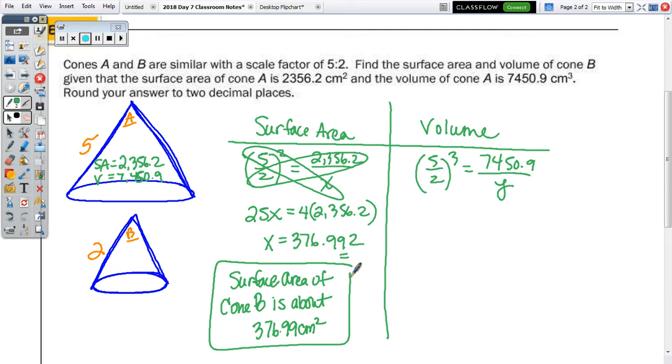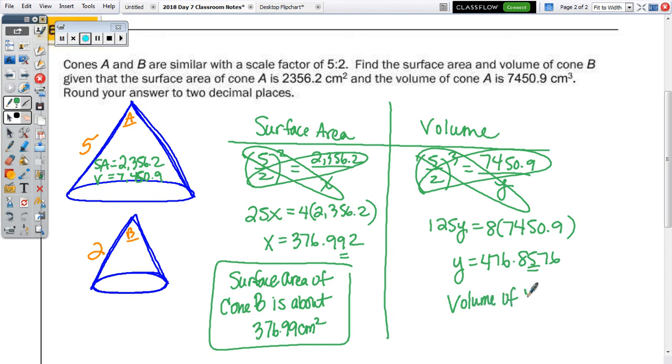For volume, 5 cubed is 125 times Y. 2 cubed is 8. So, 8 times 7,450.9. So, let's multiply 7,450.9 by 8. Then, divide by 125 to isolate Y. And we get Y is equal to 476.8576. So, I need to show what's after the 5, because we're rounding to two decimal places. And we end up with an answer of volume of cone B is approximately 476.86 cubic centimeters.